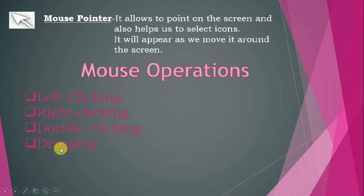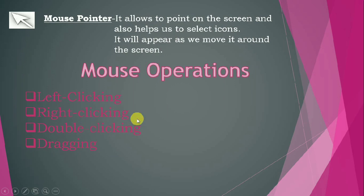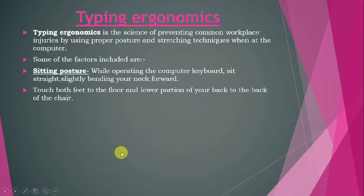Dragging means moving any icon from one place to another. To do it, first press the left mouse button on any icon, hold the left mouse button, and move it to the place where you want to move it, then release at the place where you want to place it. So dragging is the moving of any item from one place to another.